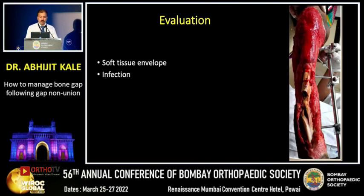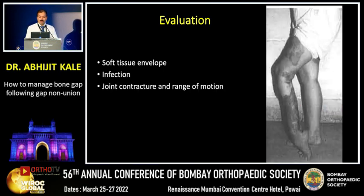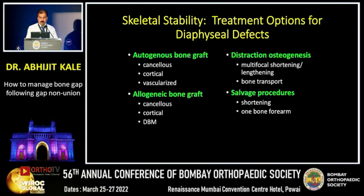When we see a case of gap non-union, it is important to evaluate the patient in terms of the soft tissue envelope and cover, assess for infection, assess for joint contracture, the range of movement in adjacent joints, and also evaluate nerve functions in terms of sensory and motor functions.